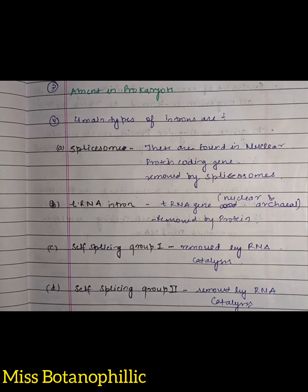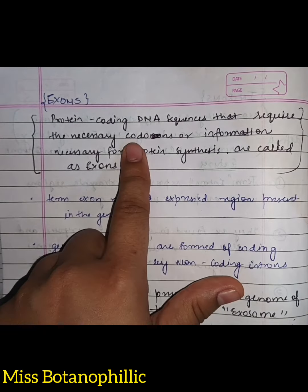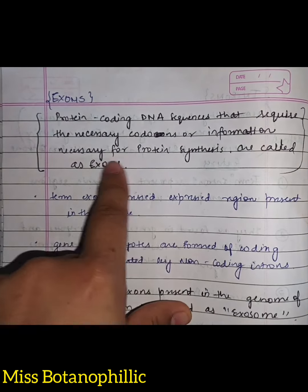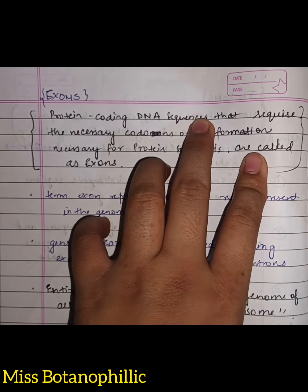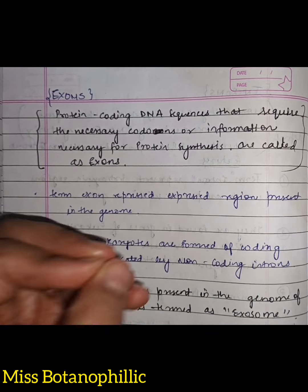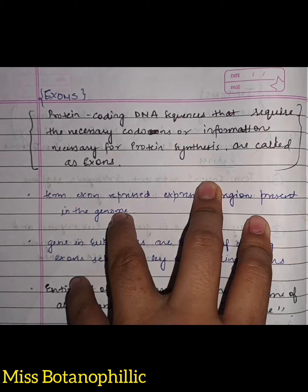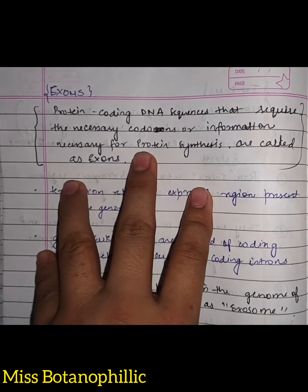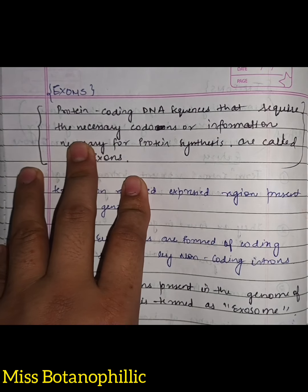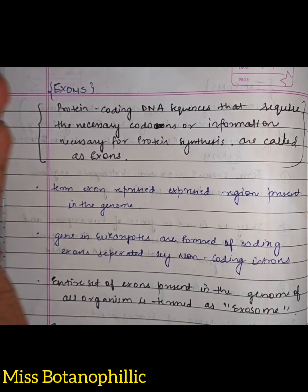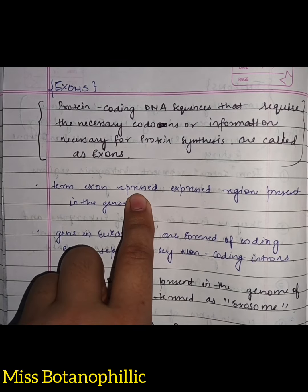Now let's talk about exons. The protein-coding DNA sequences that contain the necessary codons or the information necessary for protein synthesis are called exons. So while introns were our non-coding DNA sequences, exons are the coding DNA sequences that code for proteins and are always in search of important information or necessary codons through which they can code for protein.